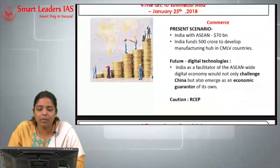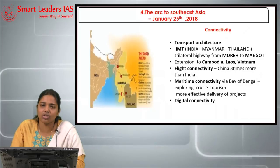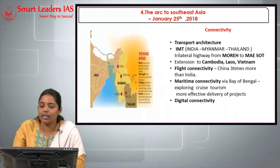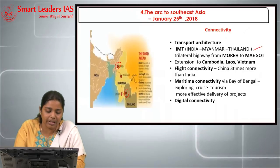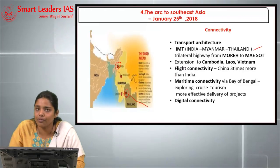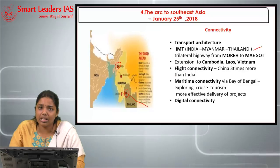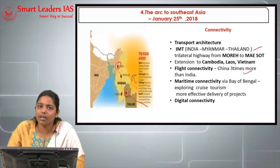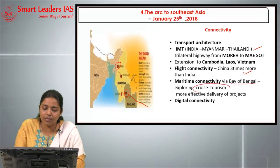On connectivity: transport architecture covers roadways, railways, seaways, and airways. In roadways, the grand plan is the India-Myanmar-Thailand trilateral highway from Moreh to Mae Sot in Thailand, with a planned extension to Cambodia, Laos, and Vietnam — already delayed and needing fast implementation. On flight connectivity, China provides three times more connectivity than India to ASEAN countries, and India needs to increase frequency. On maritime connectivity, cruise tourism potential needs to be explored. Digital connectivity to ASEAN countries is also being planned and must be utilized.